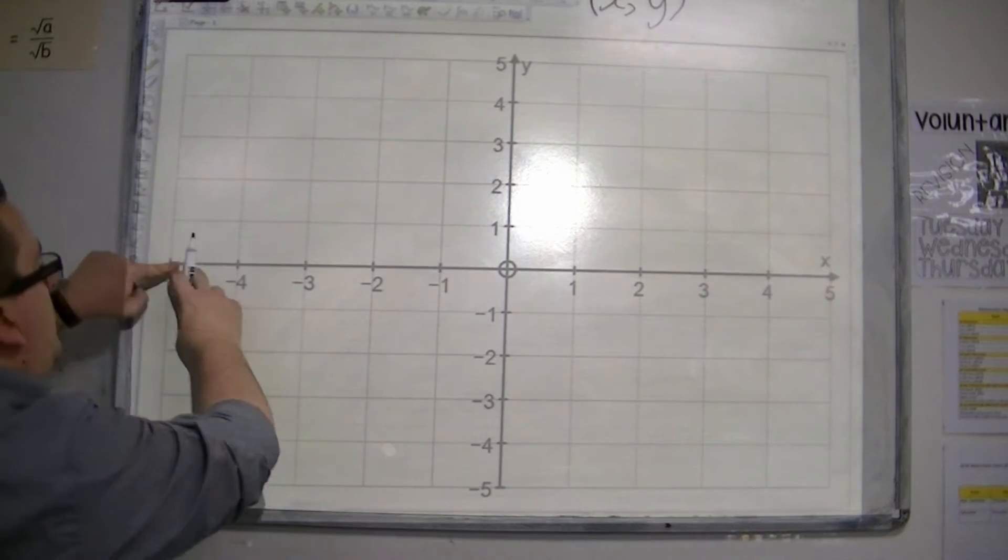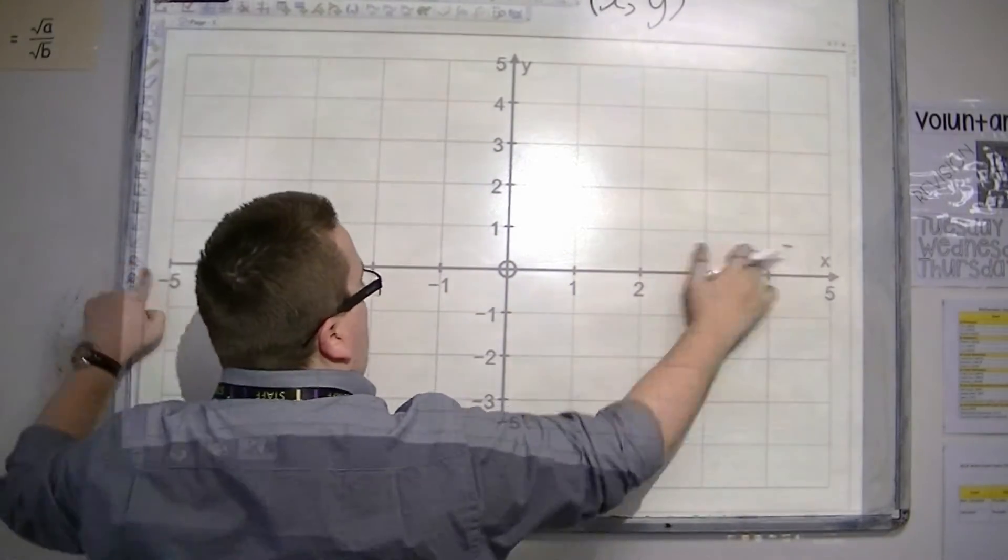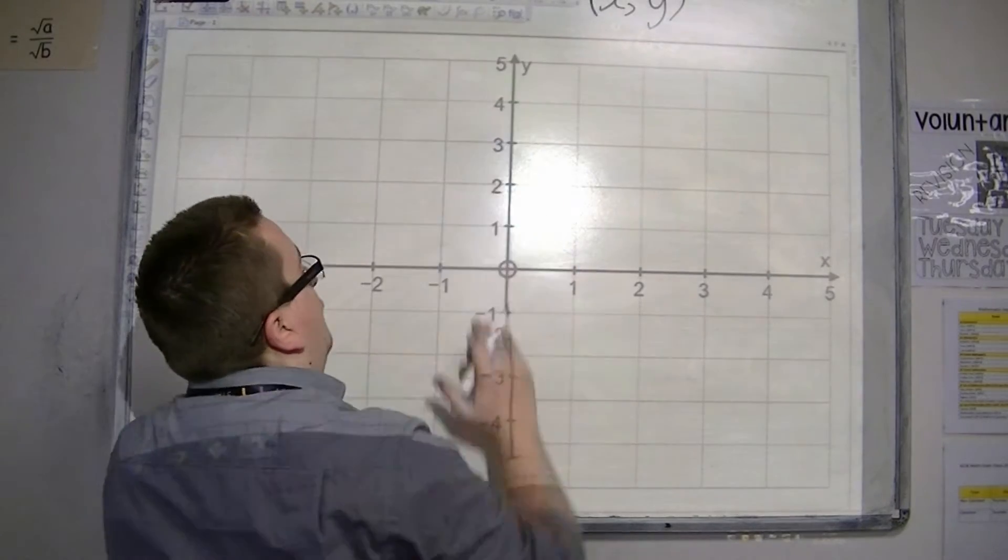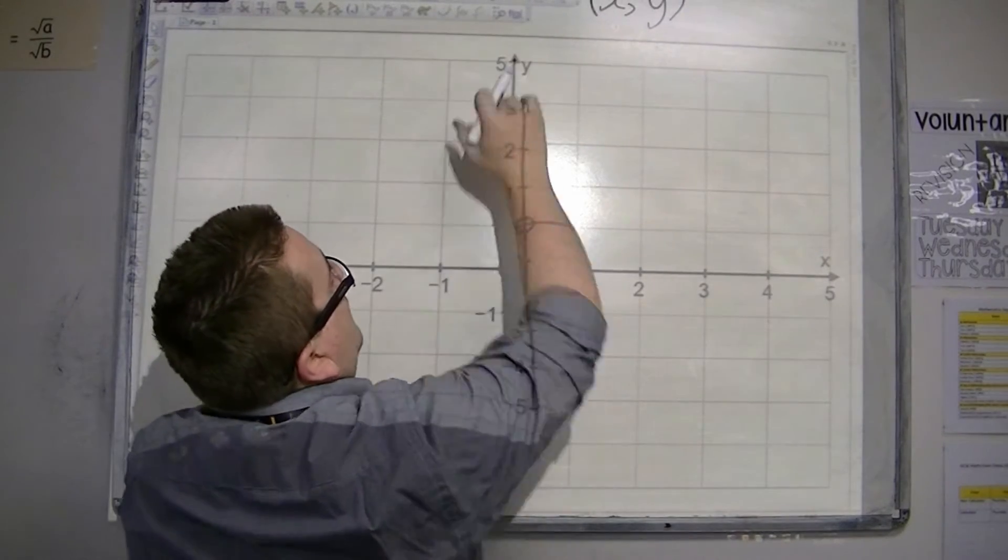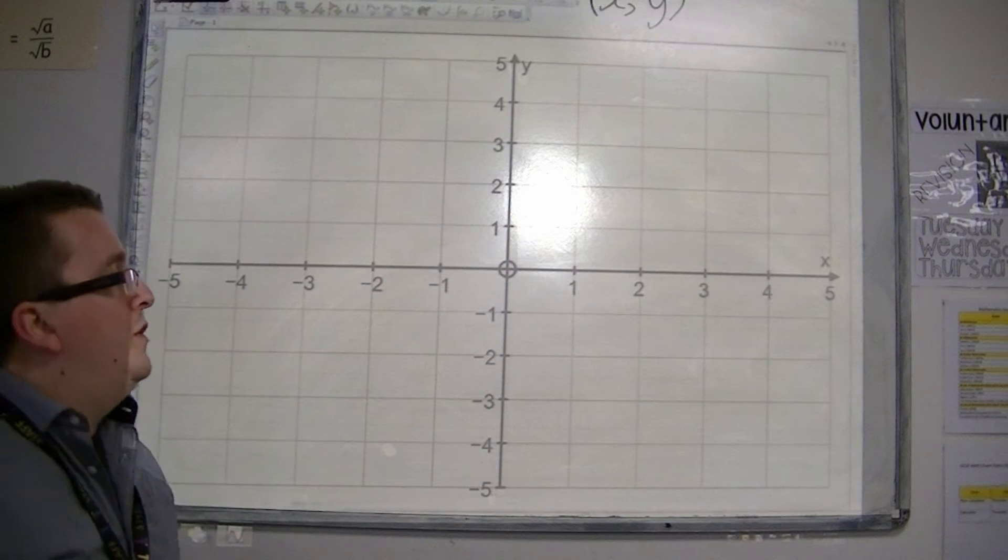So this is what we call the x-axis, the horizontal axis, and the y-axis, the vertical axis. And they relate to the x and the y that we have in our coordinates.